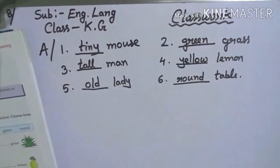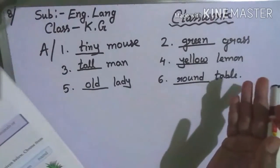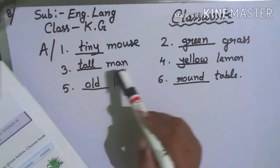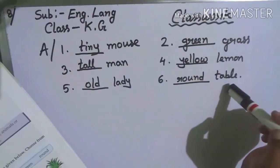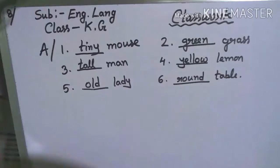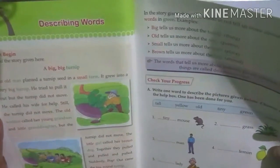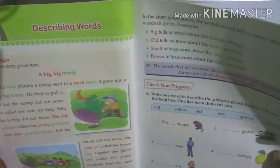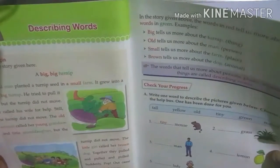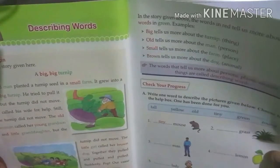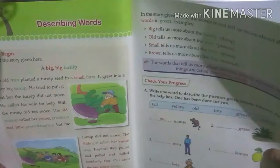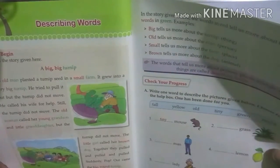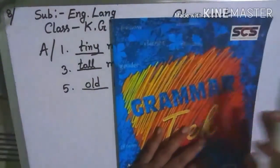Children, I hope that everyone understood. Tiny mouse, tall man, old lady, green grass, yellow lemon, round table. I hope that everyone understood describing words. The words that tell us more about persons, places, animals or things are called describing words. Children, practice chapter 7, page 42-43.